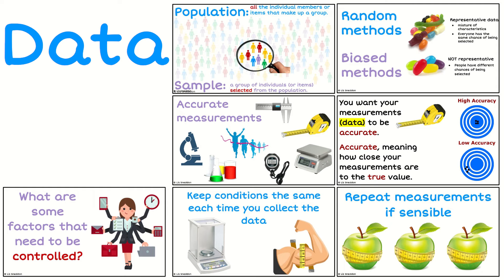We also need to think about what instructions were given, what things were controlled, what conditions were kept the same. There are often times we're going to be able to access that information and find out how the process was carried out. If we aren't able to find out, we still need to make some comments, identify possible sources of variation, and look at how they could have been managed.